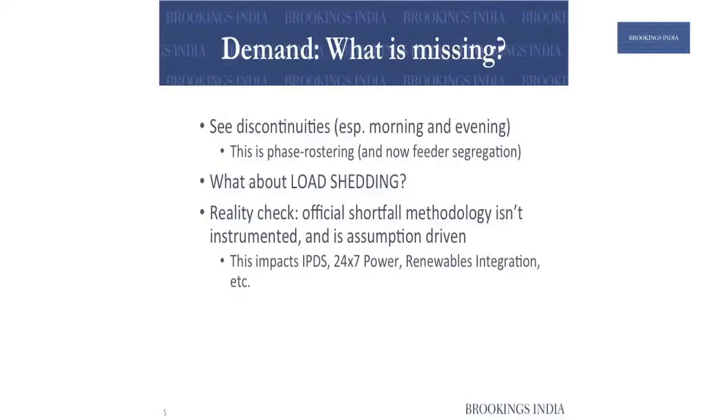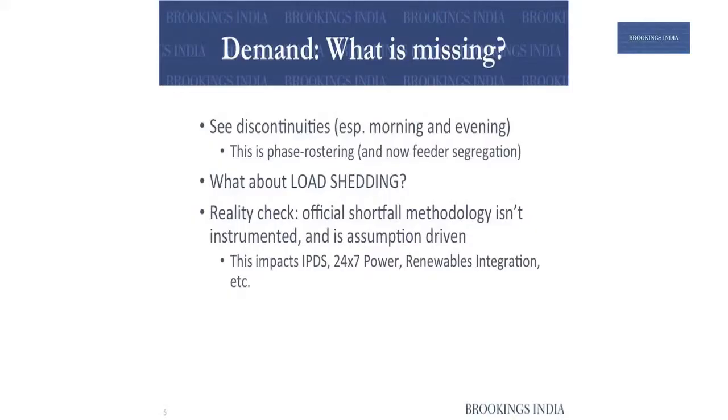These are the numbers of India — this is load as supplied. What's missing? When we talk of the supply side, we have discontinuities: you see at 6am there are little spikes and jumps downward. And you have another dip at 6pm — this is a manifestation of phase rostering where irrigation pump sets are not supplied power. So we do not necessarily have true unrestricted demand known. The second thing that's missing is load shedding. We don't have full data on what the true demand in the states is. If we talk about new programs and projects in the government, the official data from CEA are still assumption-driven — they are not instrumented to actually measure the shortfall of power.